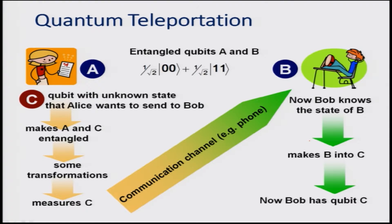Here is the idea behind the teleportation scheme which we have discussed earlier. We utilize the principle of these Bell qubits being sent as a measurement of the information exchange. The first step involves entangled qubits A and B and a communication channel — for example, a phone — so that the qubit with unknown state that Alice wants to send to Bob: A is Alice, B is Bob. Alice makes A and C entangled, some transformations are necessary, Alice measures C, whereas Bob now knows the state of B, makes B into C, and Bob has the qubit C.